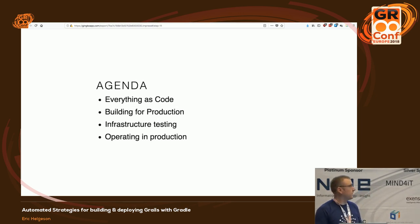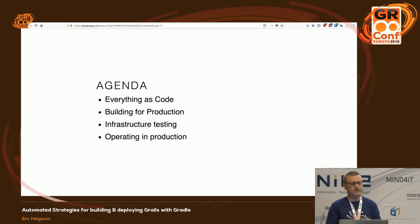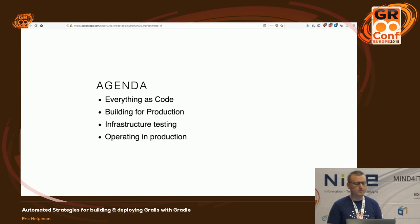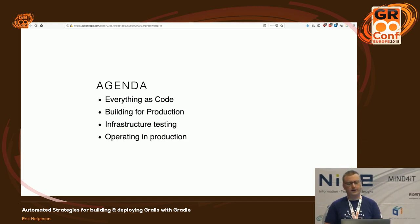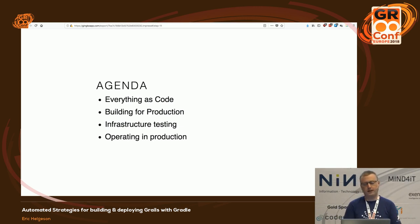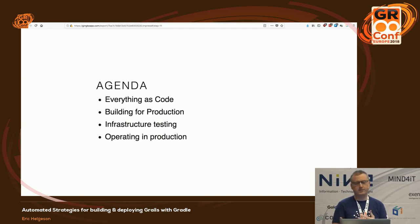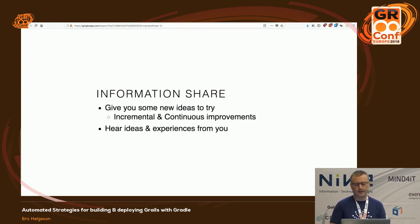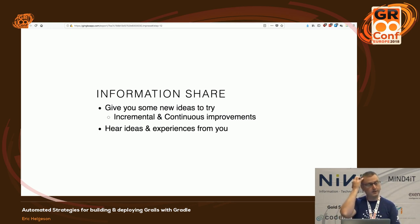In my day job I do a lot of building and deploying of Grails apps, and I want to make sure they're rock solid once they get out into production. The high-level overview: everything is code, building your app for production, testing your infrastructure, and some pro tips on operating in production. There's quite a bit of content, but we can also ask questions as we go. I'd like to hear experiences from you — automation is a journey and we can learn from each other.